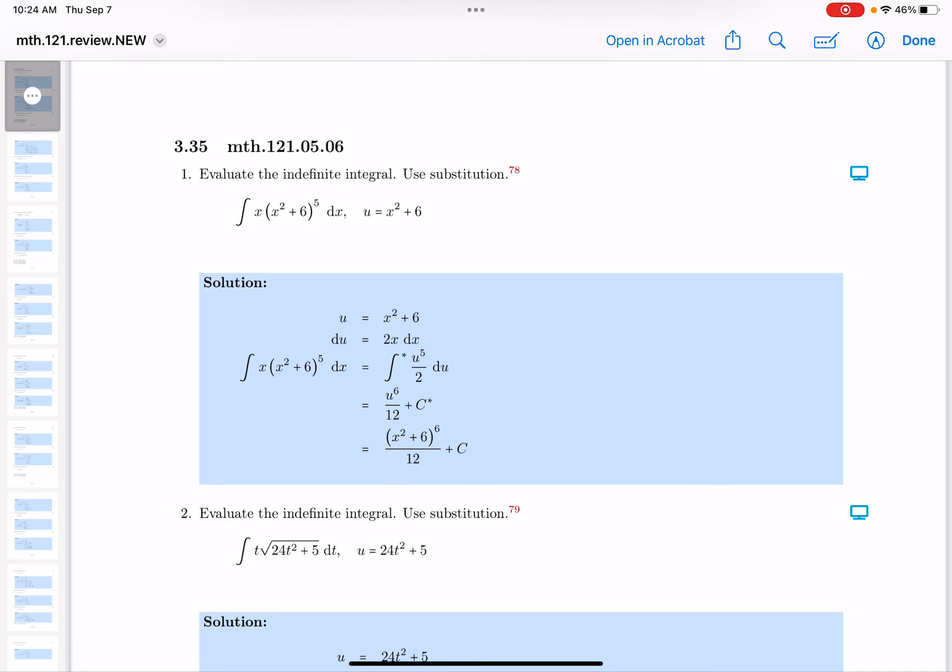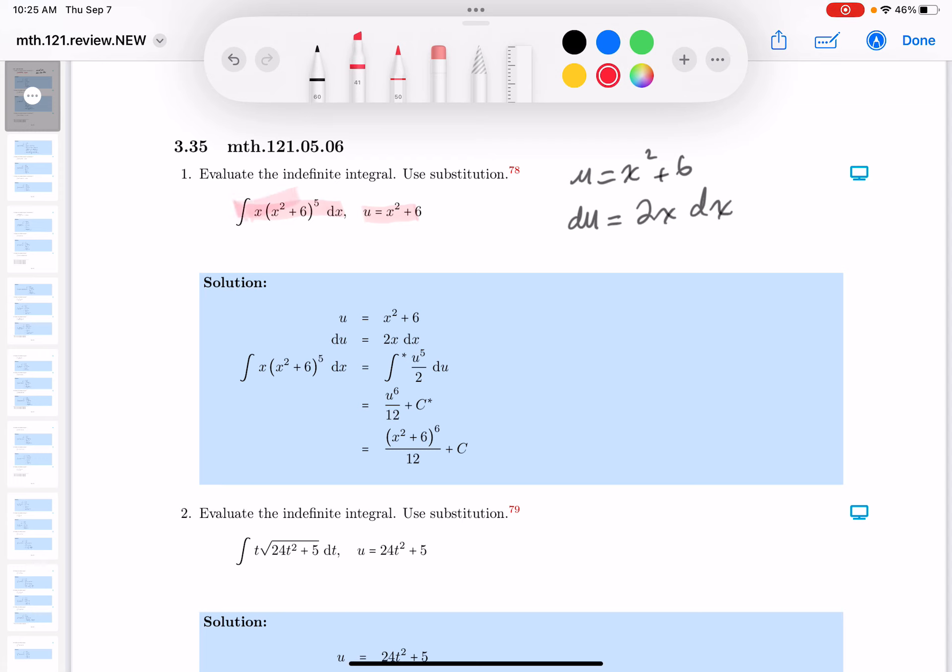Okay, you're starting with the u substitution and you're told what the u is, it's right over here. This is the integrand and we're going to replace that now. So let's take a look at it. So u equals x squared plus 6, du, this is the differential, is 2x dx. All right, let's go through this now.